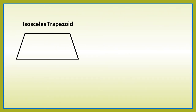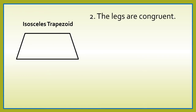Let us consider this isosceles trapezoid. For number 2, the legs are congruent. So, ito yung legs ng isosceles trapezoid. Therefore, they are congruent. We're going to use here one mark. Ibig sabihin, itong side na to ay congruent to this side. Kung anong measure nitong side na to, the same din or equal dito sa kabila.